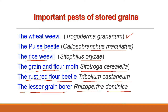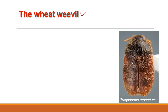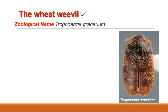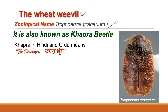The first pest is known as the wheat weevil, zoological name Trogoderma granarium. It is also known as the khapra beetle. 'Khapra' in Hindi and 'Uttu' means the destroyer. This pest is considered one of the 100 worst invasive species in the world.